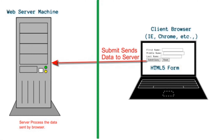Here is the block diagram: a user is browsing a particular HTML form from their laptop, and enters first, middle, and last name. When they click the submit button, the values entered in those text boxes are formed as URL data and sent to the server. The server processes that data and responds back to the browser.